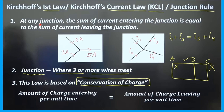Coming to Kirchhoff's first law: at any junction, the sum of current entering the junction is equal to the sum of current leaving the junction. Here, two currents — 2 ampere and 3 ampere — are entering the junction. Adding them: 3 plus 2 equals 5 ampere entering, which equals the 5 ampere of current leaving the junction.